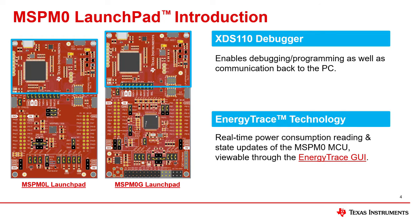The top section of the Launchpad is the XDS 110 debugger, which is used simply by connecting the micro USB to your computer. This debugger supports the Energy Trace tool, which allows you to monitor current consumption while tracking CPU status. The interface for the Energy Trace tool can be found in IDEs such as Code Composer Studio and IAR.